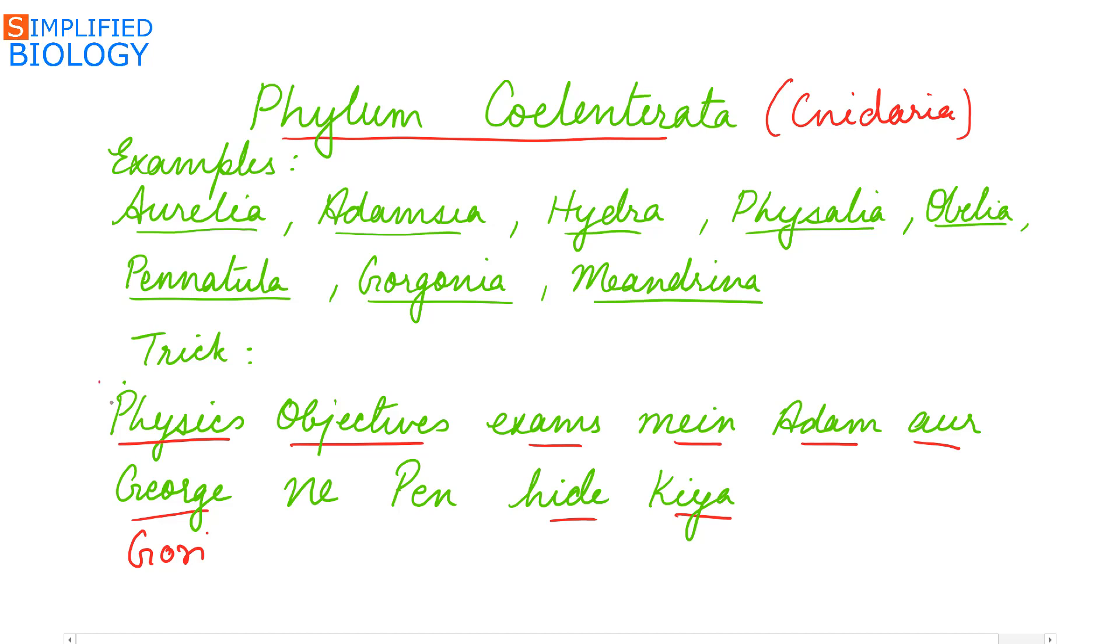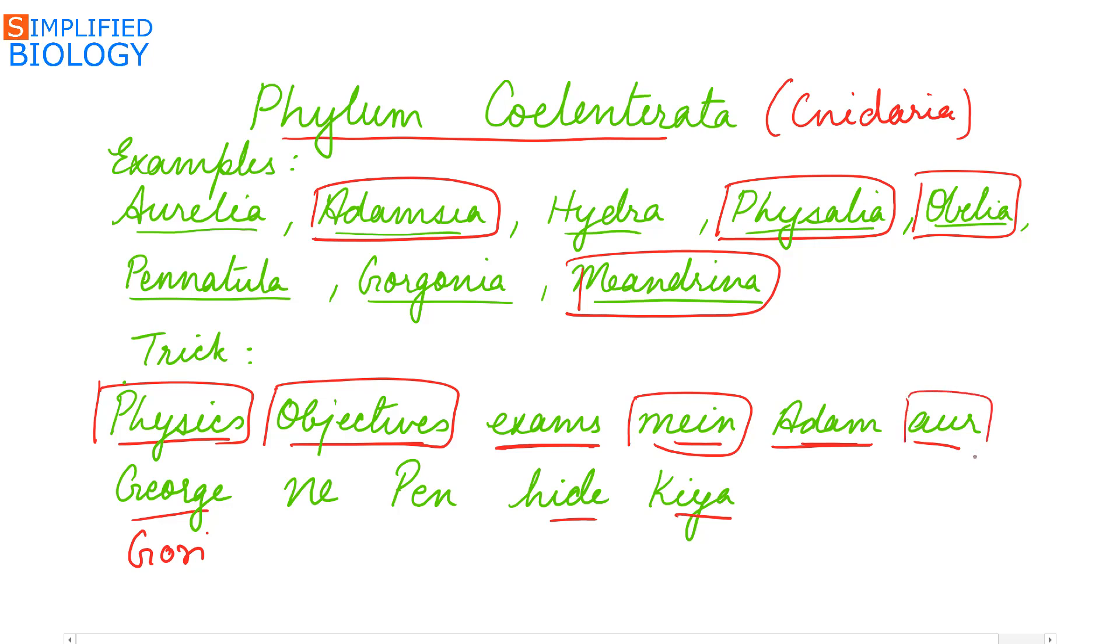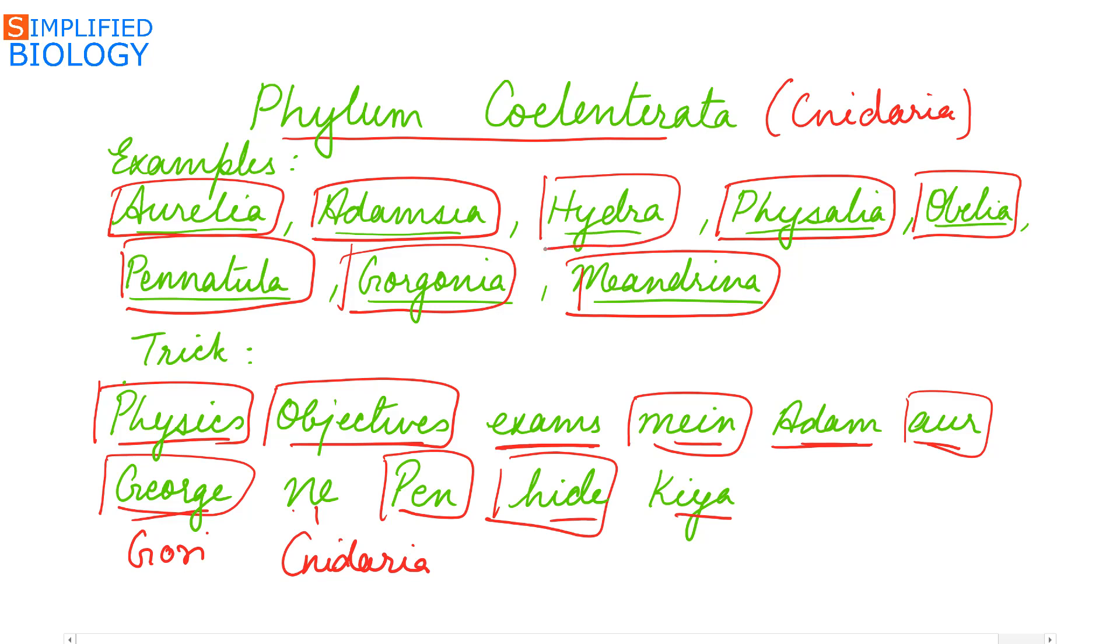Physics represents Physalia, objectives represents Obelia, exams - may is for Mandarina, Adam is for Adamsia, or is for Aurelia, George is for Gorgonia, ne represents Cnidaria, pen is for Penatula, hide is for Hydra.